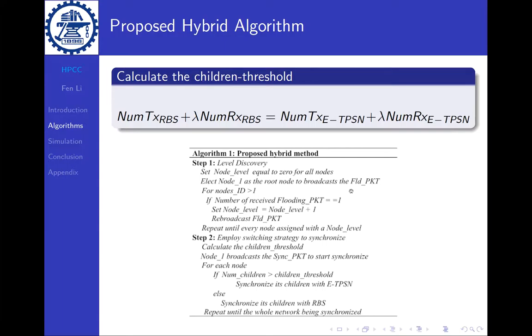So that is the E-TPSN. And then if we want to take advantage of both algorithms, we need to think of a way that can intelligently switch between the algorithms based on some threshold. So it is easy to come up with a threshold calculation equation.